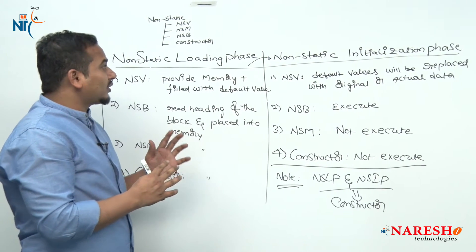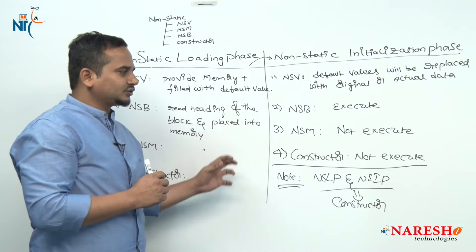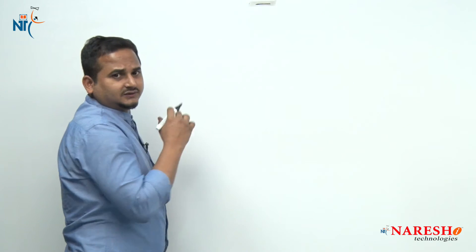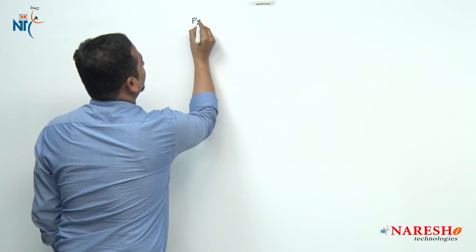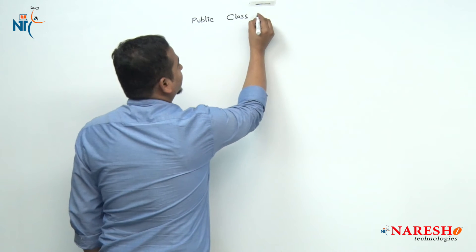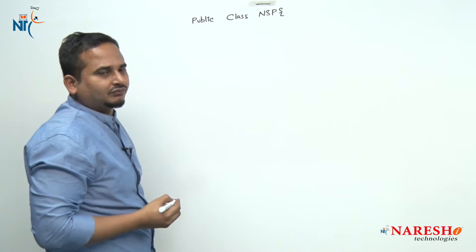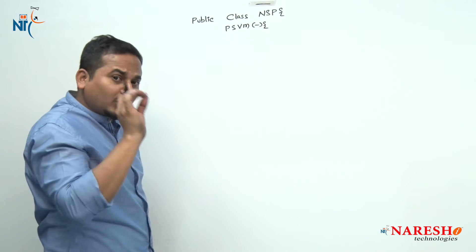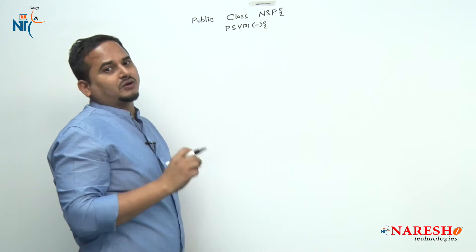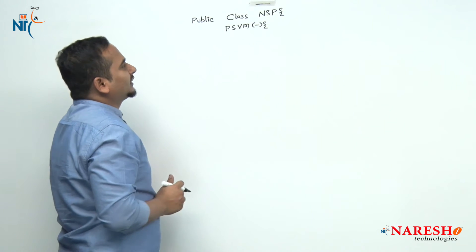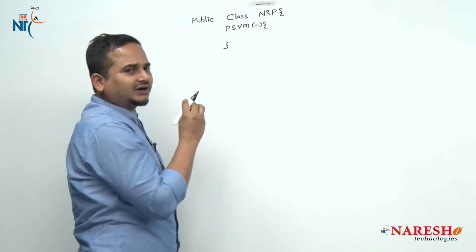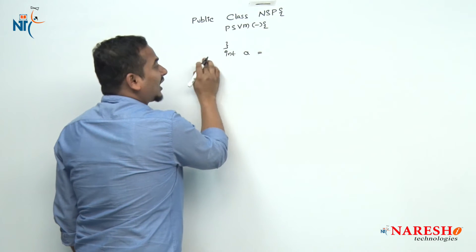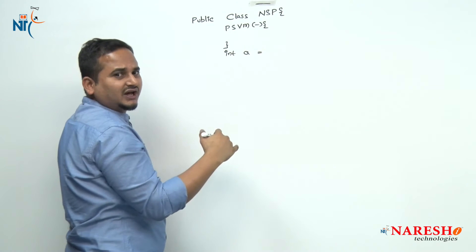Now I'm going to show you all these points programmatically. Let me take one class — public class named NonStaticPhases. In Java Standard Edition from version 1.7 onwards, we require the main method to execute any program. The main method is static. After that, I am writing one variable. If a variable is not declared with the static keyword, it comes under non-static.